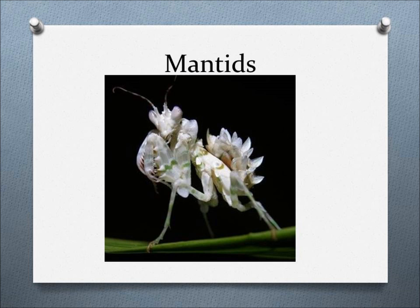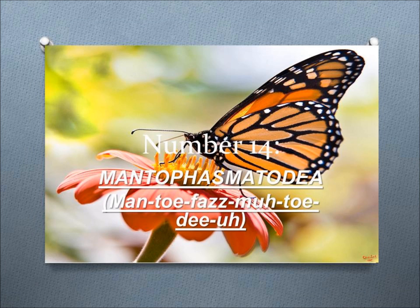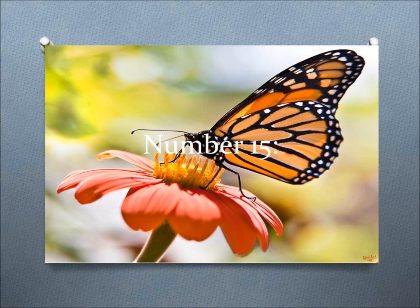Number 14, Mantophasmatodea. This order includes heel walkers, or gladiators, enigmatic and recently discovered in southwest Africa.